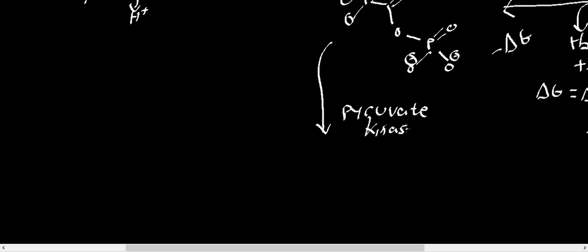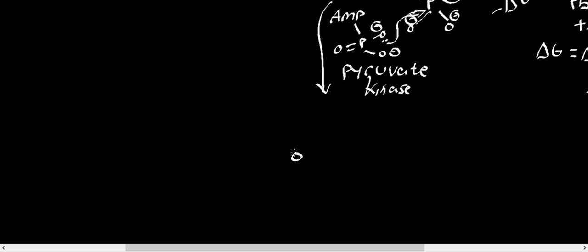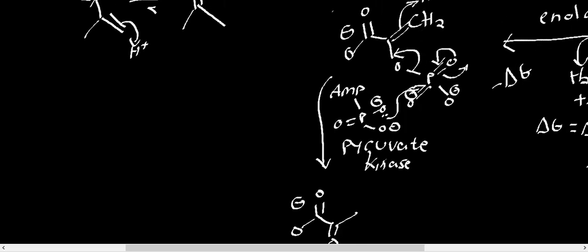The mechanism of pyruvate kinase is similar to what we've seen before. The oxygen's lone pair kicks up onto the phosphorus, the pi bond kicks up then kicks back down. But instead of what normally happens, the molecule now tautomerizes: the electron pair reforms the ketone, and another electron pair extracts a proton. What we end up generating is pyruvate. Pyruvate is an alpha-ketoacid — the first of several you'll encounter, alongside oxaloacetate, alpha-ketoglutarate, and alpha-ketoadipate.